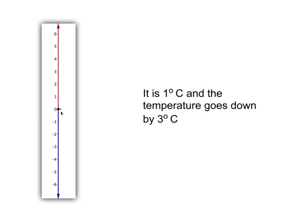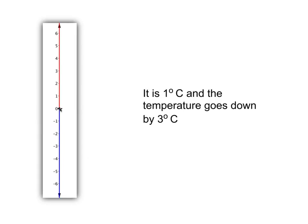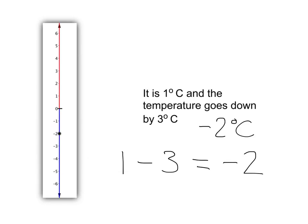If we are at 1 degree centigrade and our temperature comes down by 3 degrees centigrade, we can picture this as follows. You start at 1 and you come down by 1, 2, 3 degrees centigrade, and you'll end up at negative 2 degrees centigrade. We can summarise this by saying if we start at 1 and we come down by 3, we will end up at negative 2.